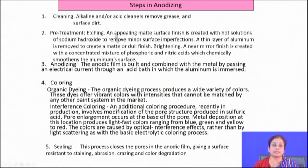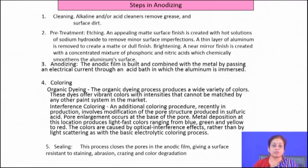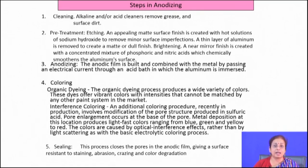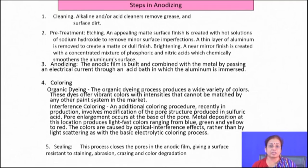Cleaning is done by alkali solution to remove grease and surface dirt; pretreatment etching can also be done so that the surface is very clean. Anodization is a process of building an anodic film combined with the metal by passing electrical current into an acid bath where aluminum is immersed. Coloring may be done by organic dyeing or by interference coloring. Finally, sealing is done so that whatever pores are there on the surface get sealed, making the surface resistant to staining, abrasion, and degradation. Organic sealing or wax sealing is used to cover the surface and fill the pores.